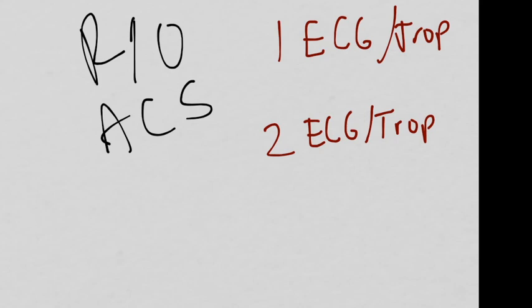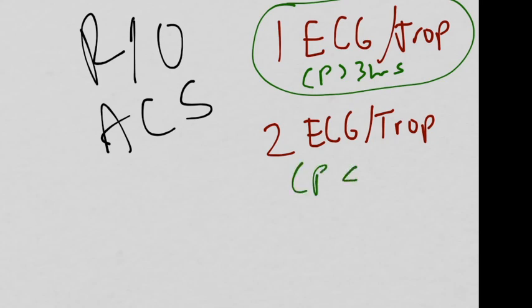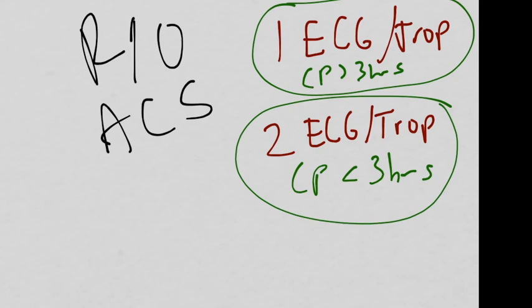And so, when do we get one EKG versus two EKGs and troponins to try to rule out ACS? Well, that's all determined by how long your chest pain has been going on. So, if your chest pain has been going on for greater than three hours, you can probably get away with one set of EKGs and troponins that are negative to rule out ACS. And if your chest pain has been going on for less than three hours, you're going to have to get two EKGs and troponins that are negative or non-dynamic to definitively rule out ACS in your patient.